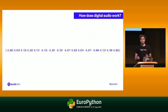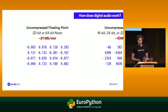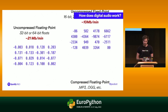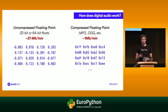So how might we store this? Uncompressed floating point data is 32-bit or 64-bit floats — about 21 megabytes per minute of audio. Uncompressed fixed-point data as 16-bit, 24-bit, or 32-bit signed integers gets down to about 10 megabytes per minute. Back in the 90s, people invented clever compression codecs like MP3 and OGG that compress all the way down to one megabyte per minute. To do anything with compressed data, we need a library to decode it and give us the numeric information.